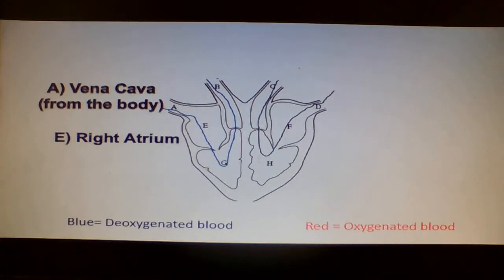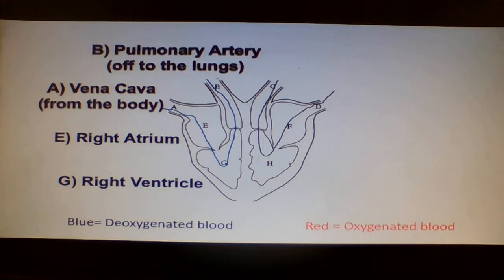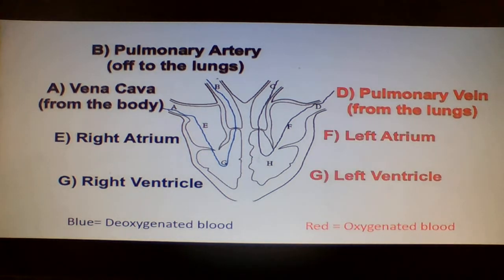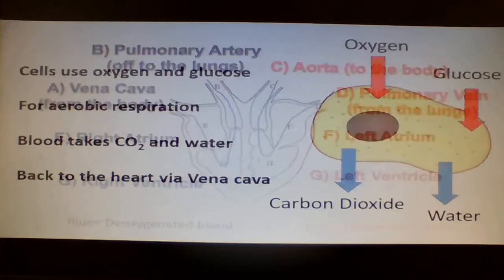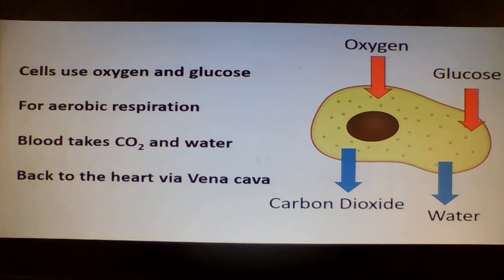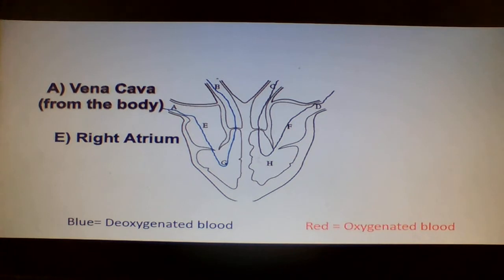Right atrium, right ventricle, pulmonary artery, off to the lungs, pulmonary vein, then the left atrium, left ventricle, aorta. Sounds use oxygen and glucose for aerobic respiration. Blood takes CO2 and water back to the heart via vena cava.